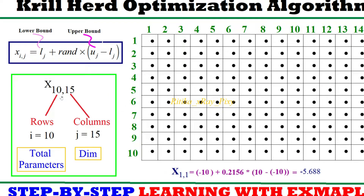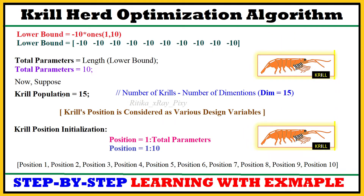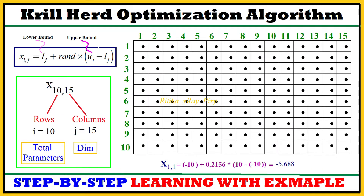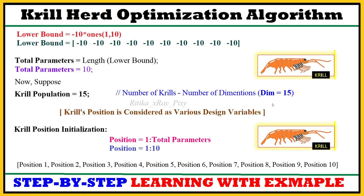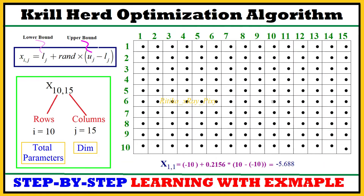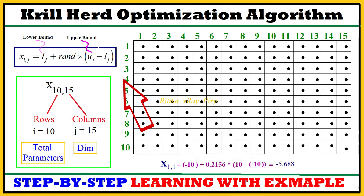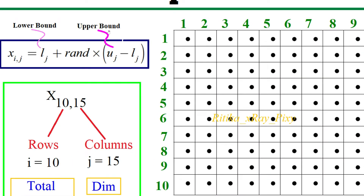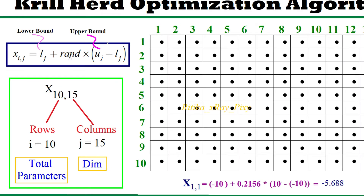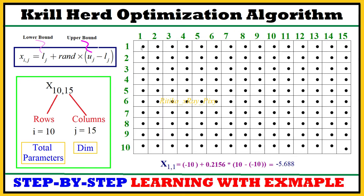Here we have ten as the total number of parameters and fifteen as the dimension, since the krill's position is considered as the number of dimensions. You can see this equation that we use to calculate the position values for krills in the search space — the lower bound, the upper bound, and rand is any uniformly distributed random value.